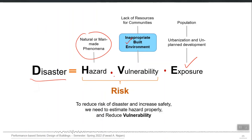We have very high risk — coming from very high hazard and very high vulnerability — and a huge population exposed to that risk. Sometimes even if you have low risk, but your exposure is so high, you can ultimately still have a disaster.